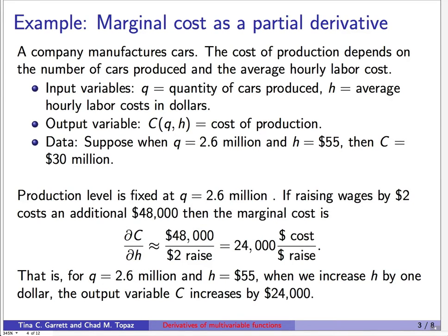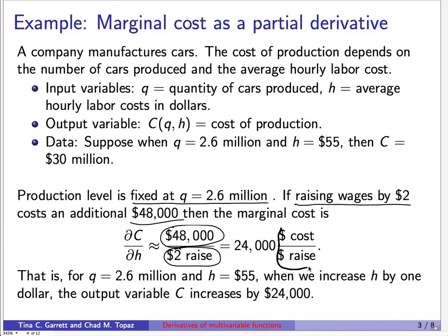Now consider the other partial derivative. We hold q fixed at 2.6 million and instead raise wages by $2. If that results in $48,000 of additional production cost, then ∂c/∂h ≈ $48,000 ÷ $2 per hour = $24,000 in production costs per dollar of raise. That is, at q = 2.6 million and h = 55, increasing h by one dollar while leaving quantity alone raises the output variable c by about $24,000.